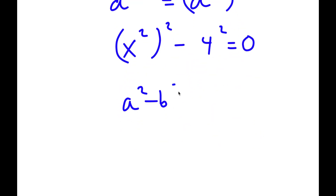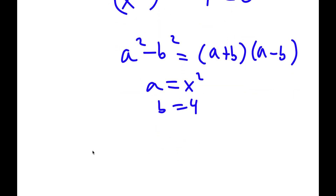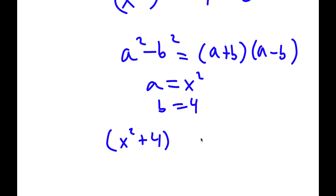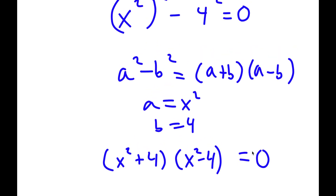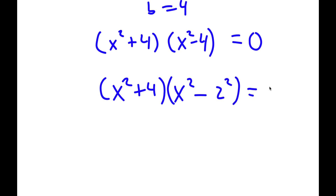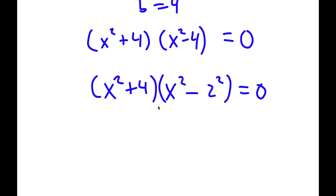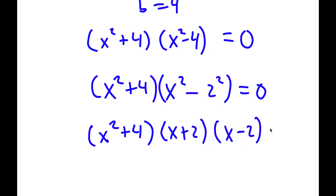Now if I have something in the form a squared minus b squared, this is equal to a plus b times a minus b. So in this case a is x squared and b is 4. So I have x squared plus 4 times x squared minus 4 is equal to 0. And for x squared minus 4 I can rewrite that as x squared minus 2 squared, which factors to x plus 2 times x minus 2, all equal to 0.